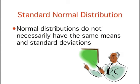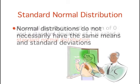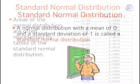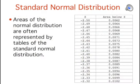As discussed in the introductory section, normal distributions do not necessarily have the same means and standard deviations. A normal distribution with a mean of 0 and a standard deviation of 1 is called a standard normal distribution. Areas of the normal distribution are often represented by tables of the standard normal distribution.